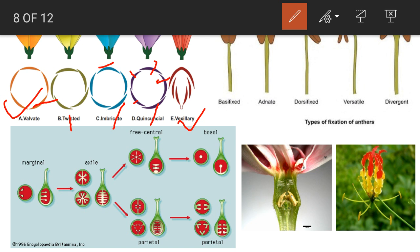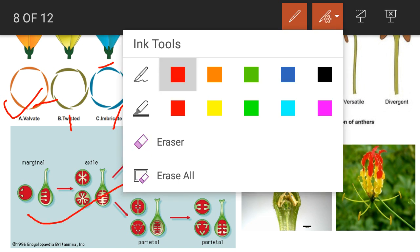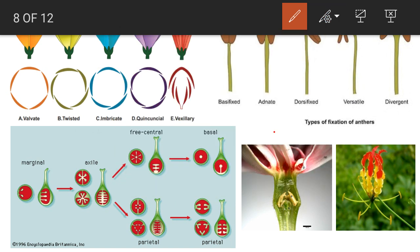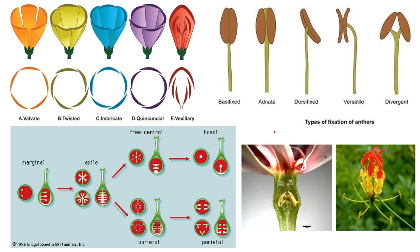The next important character is the arrangement of ovules on the placenta inside the ovary, which is called placentation. The first type is marginal — ovules are present on the margin of the ovary. Second is axile placentation — ovules are present on the central axis of the ovary. Third is free central — ovules arranged freely on the axis inside the ovary. Another type is parietal — ovules present on the peripheral walls of the ovary locules. Last is basal placentation, where the ovule is present at the base of the ovary.